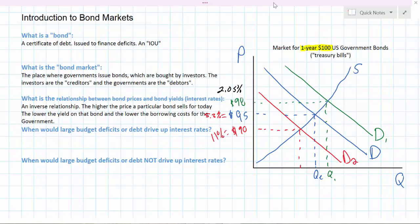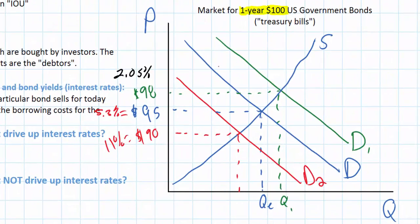What might determine the demand for a particular government's bonds? Generally speaking, demand for a government's bonds is based primarily on the perceived risk of lending money to that government. If a government is perceived to be very stable and likely to repay its debt, demand for its bonds will be fairly high. If a government is perceived to be unstable and unlikely to repay its debt, demand would fall, driving the cost of borrowing up.